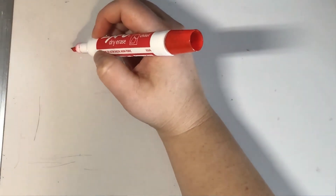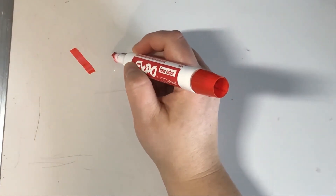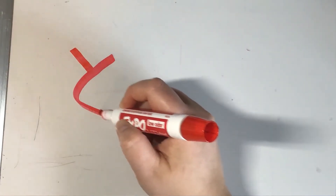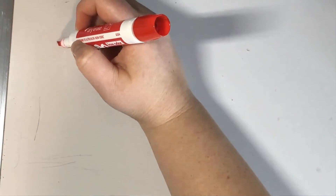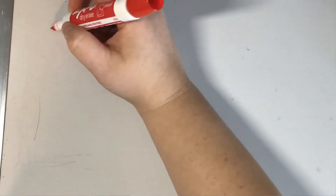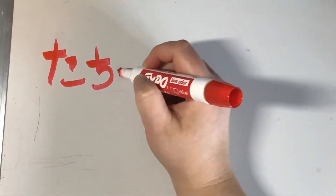The last T-row character is to. Starting from the left, go on an angle to the right, then down-right. From the right side, do a stretched-out C curve. So: left-hand corner going down on an angle, then right corner coming around with a curve. That covers all the T ones: ta, chi, tsu, te, to.